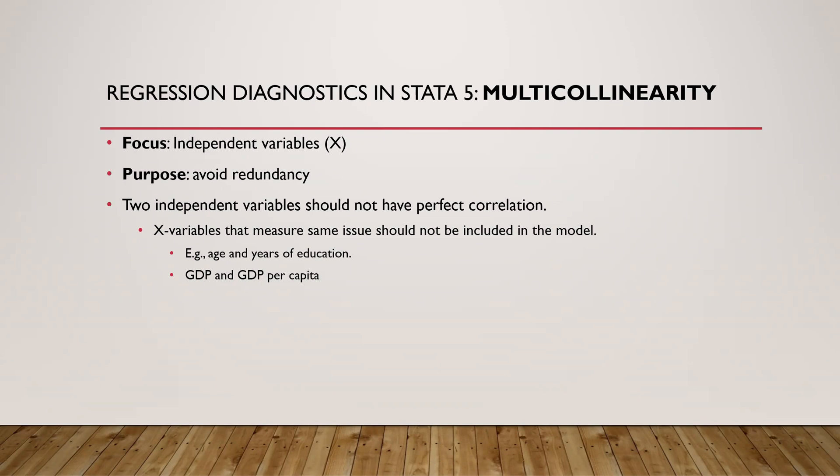For example, age and years of education — they measure the same thing and we should not have both of them. The same applies to GDP and GDP per capita, because GDP per capita is just GDP divided by the number of citizens.